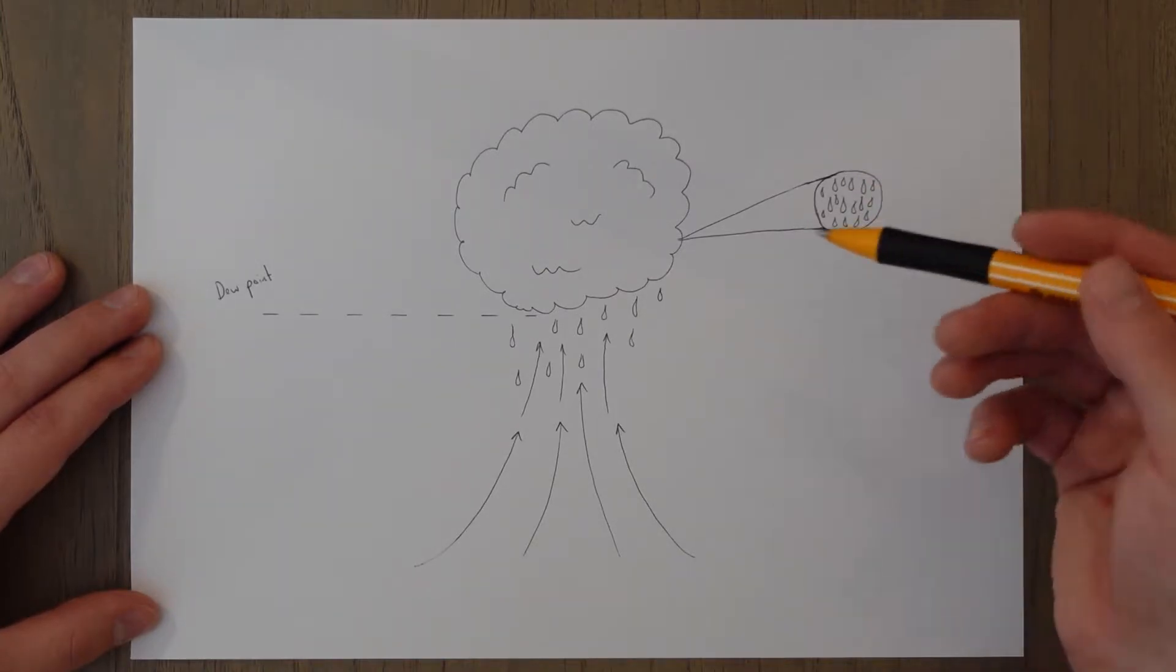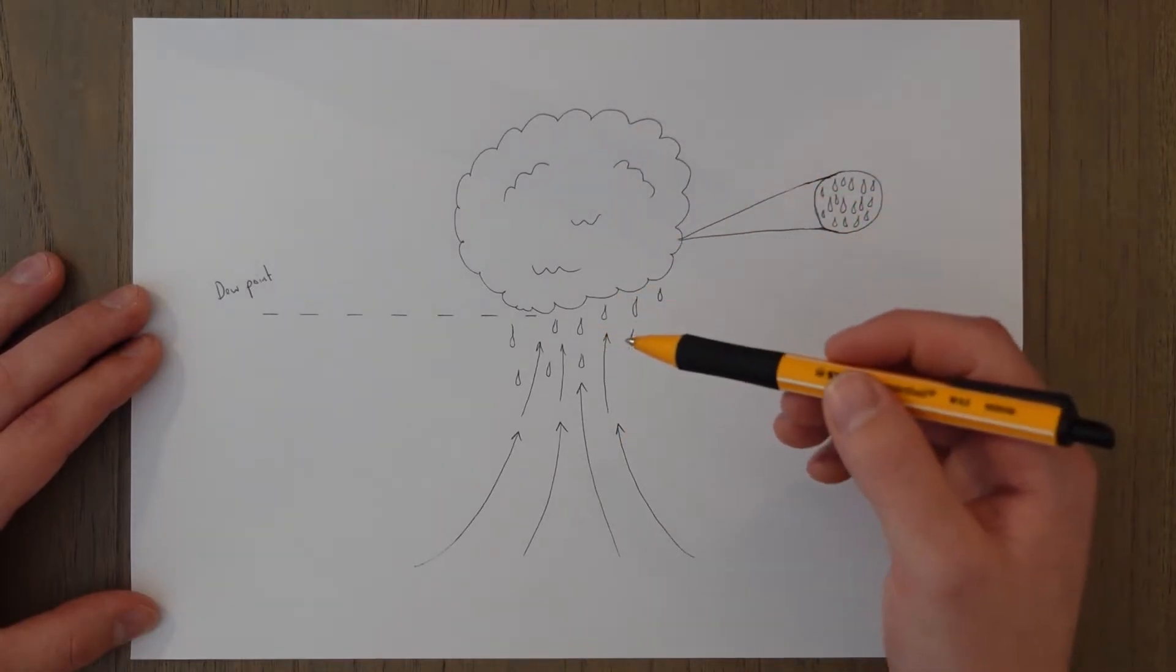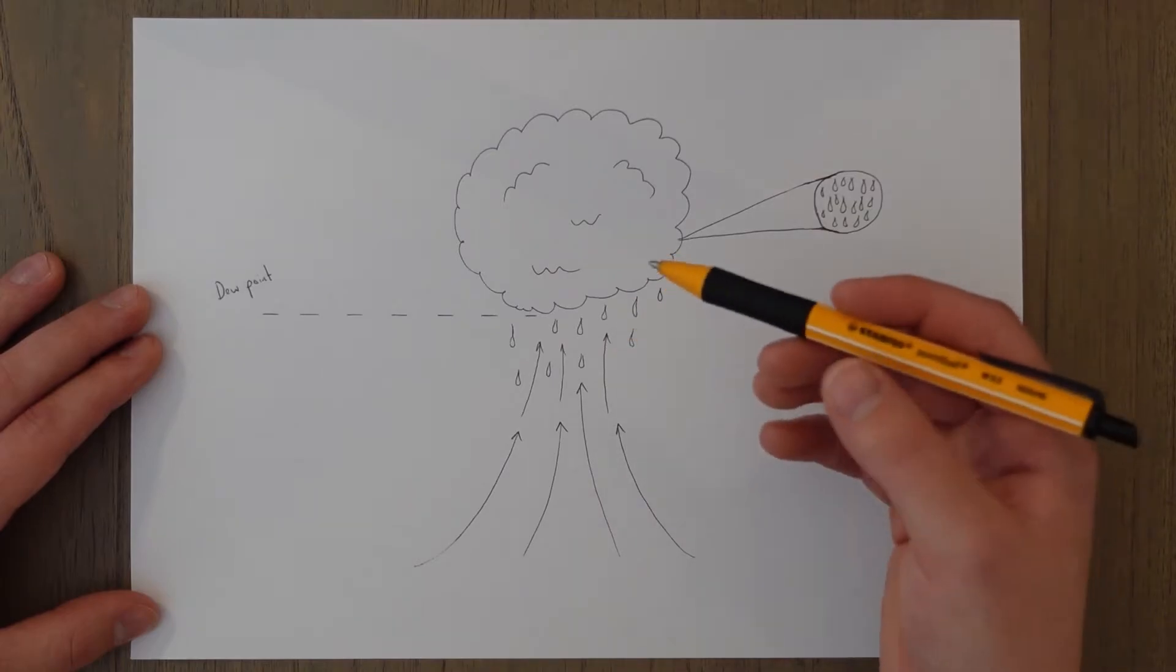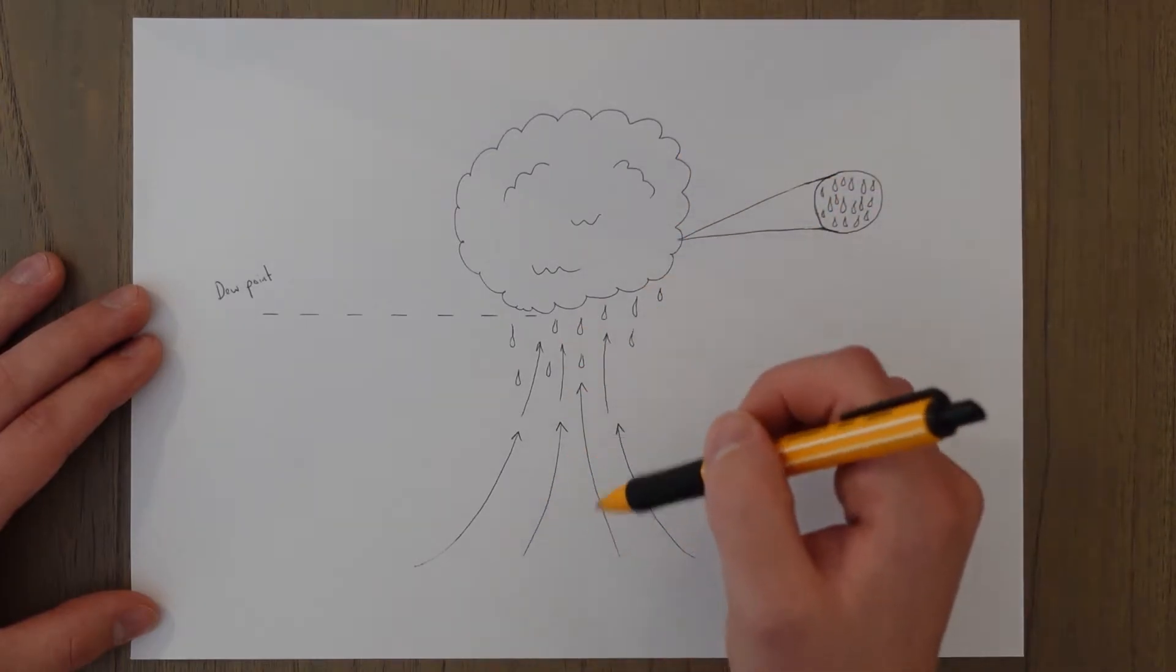The suspended water droplets or ice crystals will then fall down back to earth as precipitation if they grow large enough and heavy enough for gravity to pull them down at a stronger rate than the air is rising up.